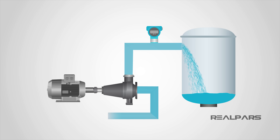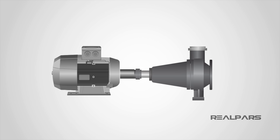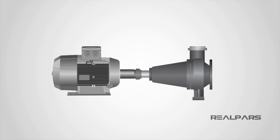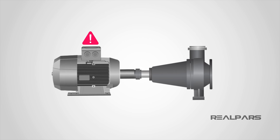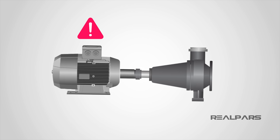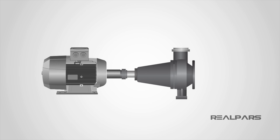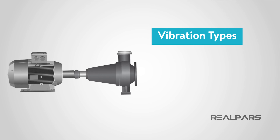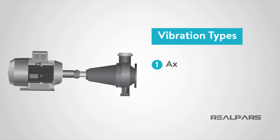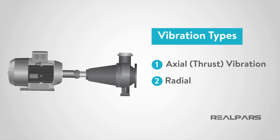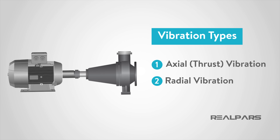Vibration in industrial equipment is sometimes part of the normal operation, but sometimes it can be a sign of a problem. In machine monitoring, we are dealing with two types of vibration: axial or thrust vibration, and radial vibration.